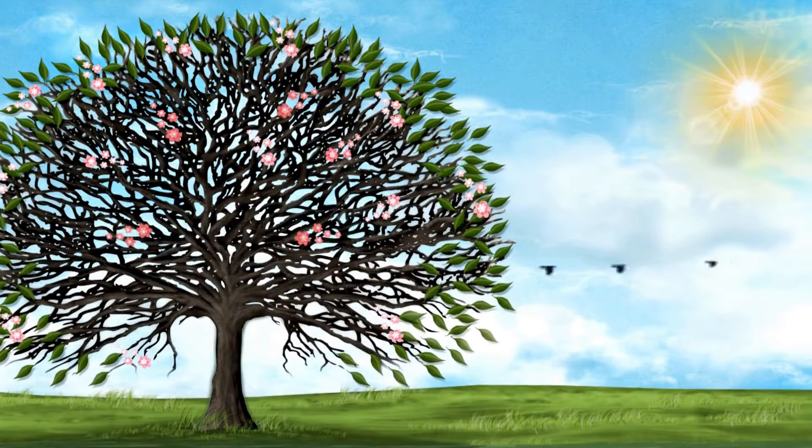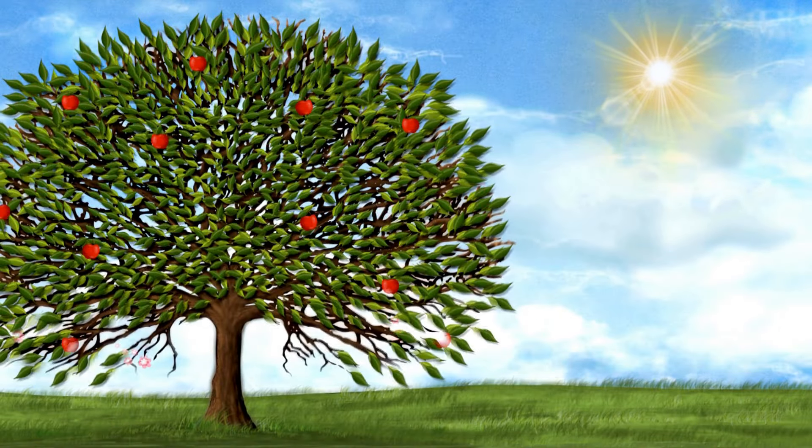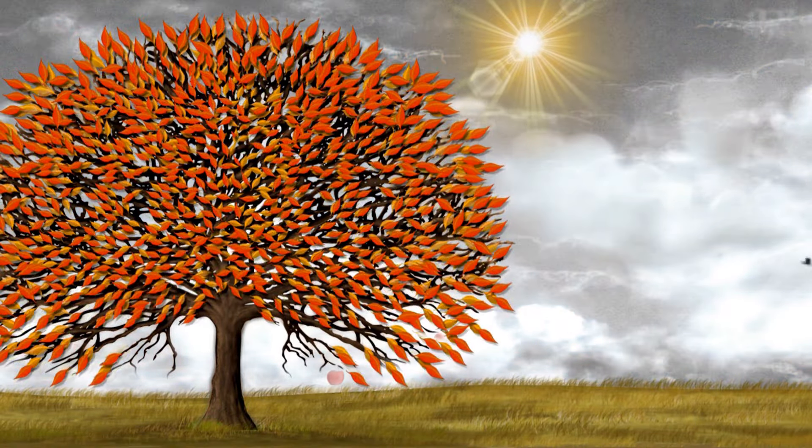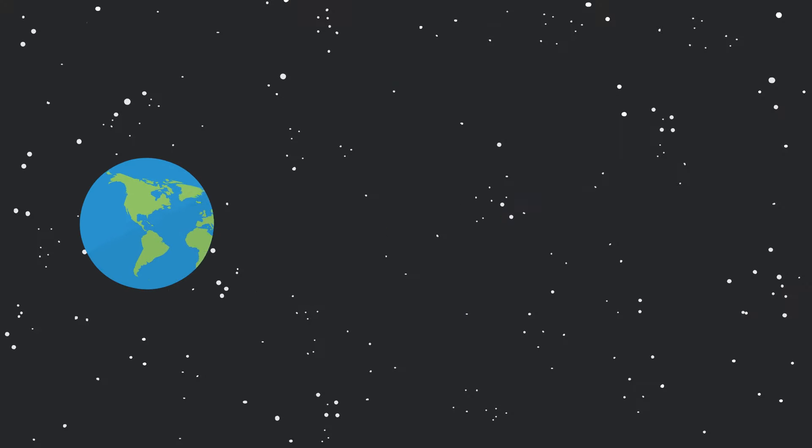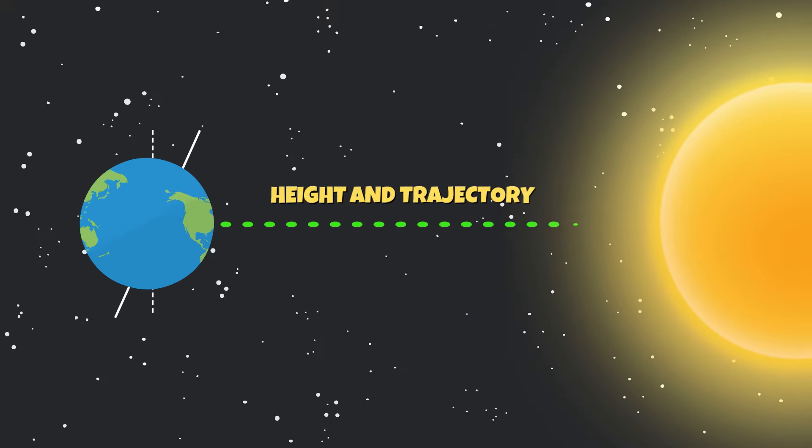Reflect on how the apparent path of the sun changes with the seasons and what this tells us about Earth's axial tilt. How does the tilt influence the height and trajectory of the sun throughout the year?